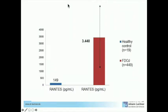Here is another graph showing 449 cases. RANTES is at a medium level of 3,440, while the healthy reference is here. These 449 cases are all patients with MS, ALS, rheumatoid arthritis, and similar immunological diseases — and this is why we performed surgery on them.